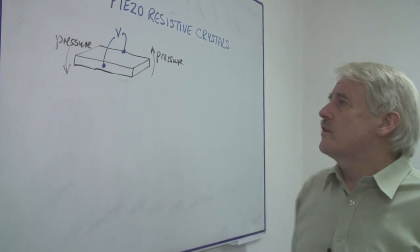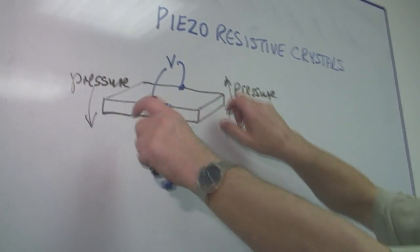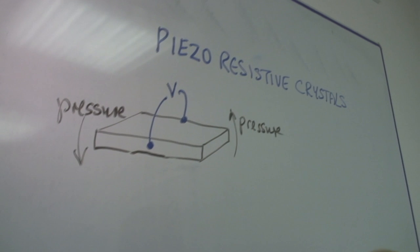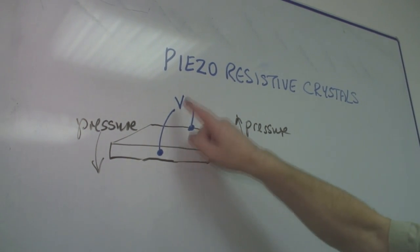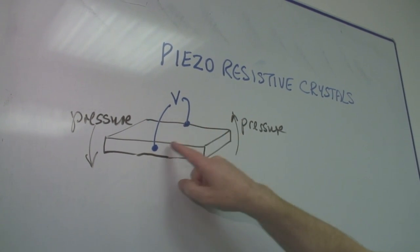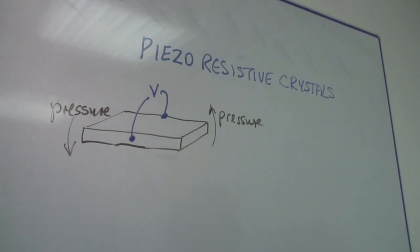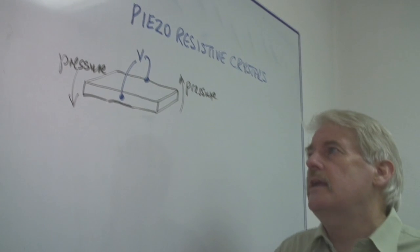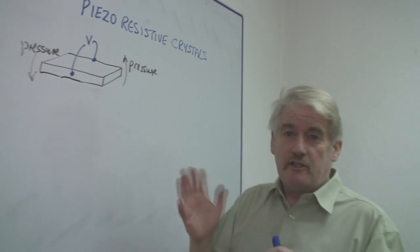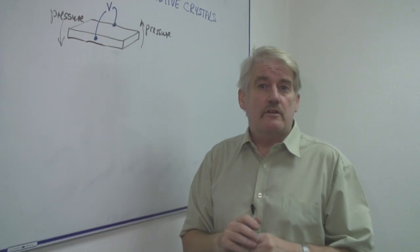The huge advantage of them is that by applying pressure and twisting or bending them, you get a voltage generated across the sides of the crystal. This will relate to the amount of bending. It also means you can actually use it to generate current sometimes.